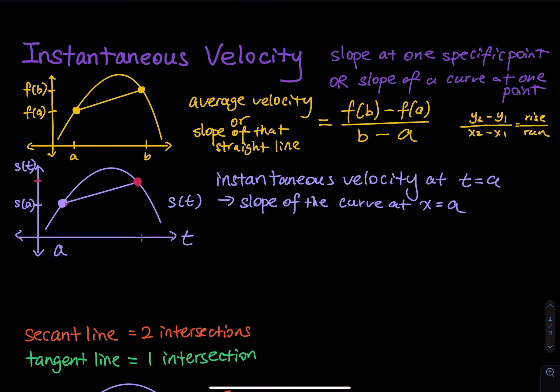Instantaneous velocity is the slope of a curve at one specific point. So you have a curve, you pick a point, and you want to find the slope of that curve at that one specific point. Let's say you are running a race toward the finish line. What is your velocity at the exact moment you cross the finish line? If you take a picture at that moment, you are motionless — there is no way to tell what your velocity is based on that picture.